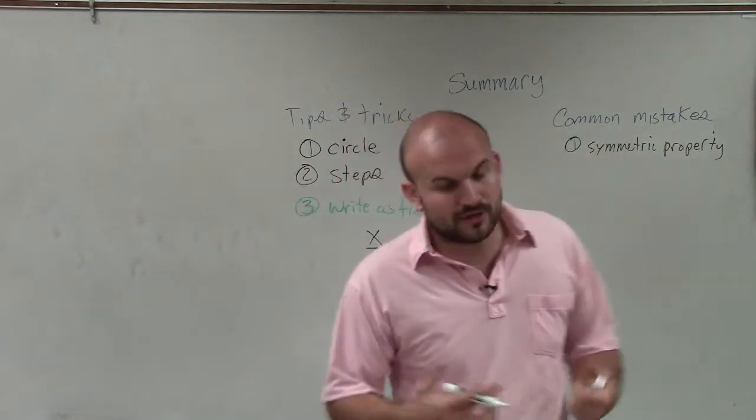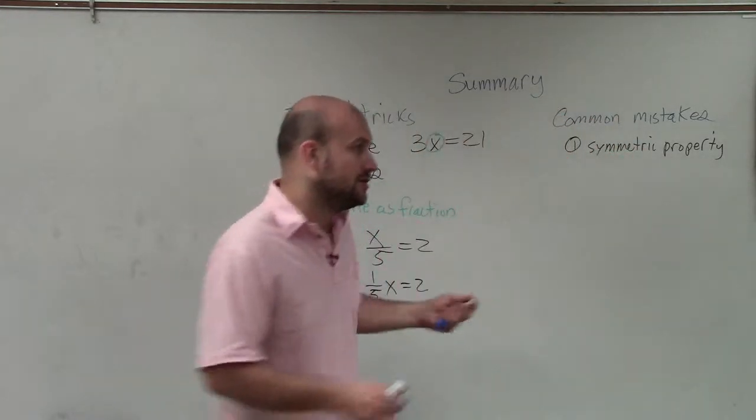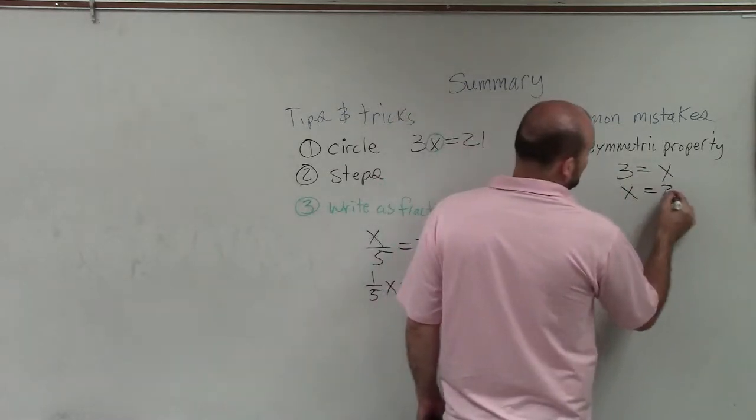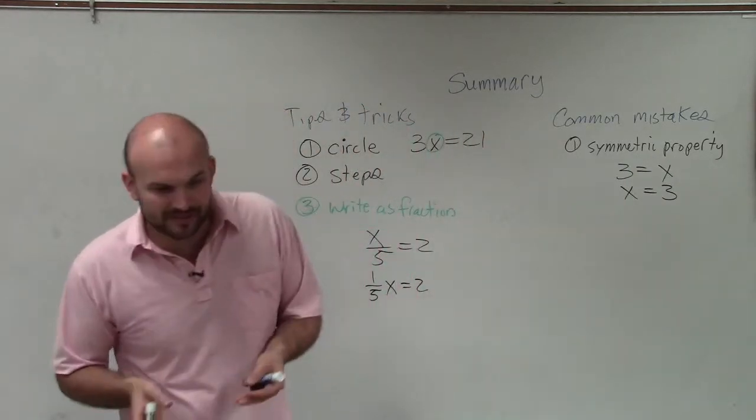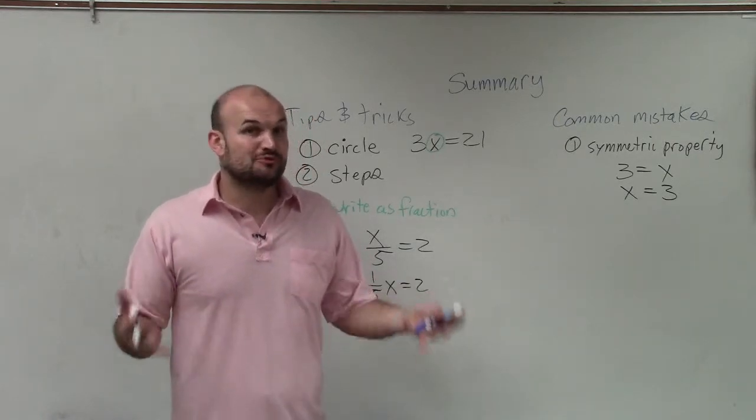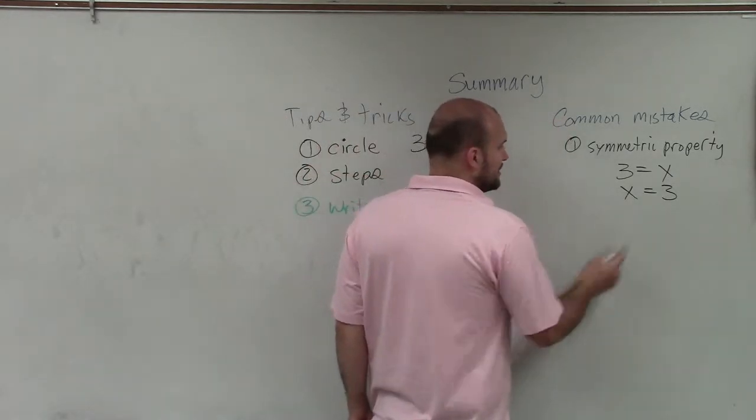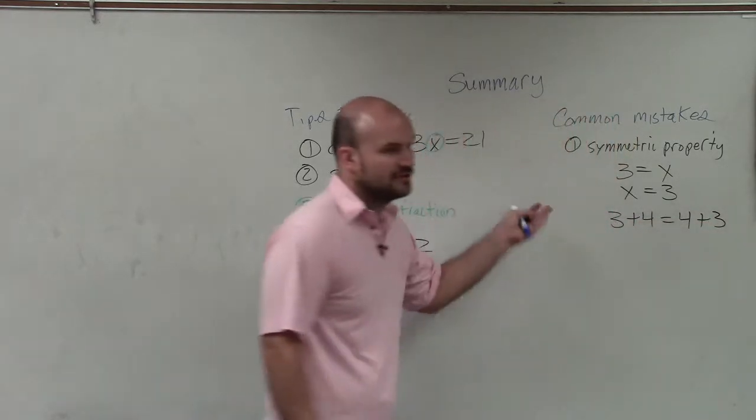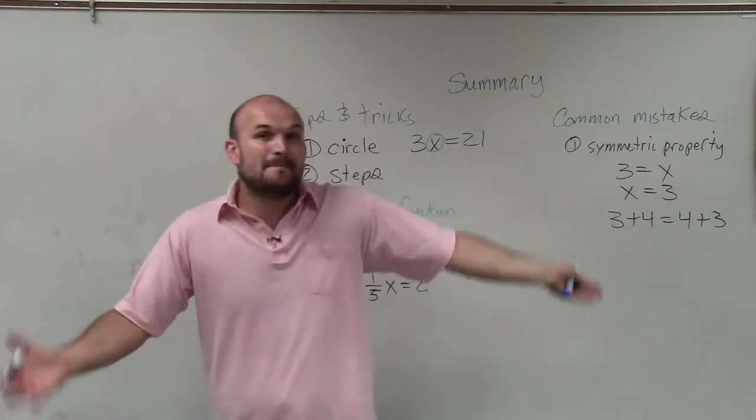The next thing is the symmetric property. We're going to be solving one-step equations with variables on both sides of the equation. So it's very important if you solve an equation and you have 3 equals x, for you to understand that is the same thing as x equals 3. But the thing that gets me with the symmetric property is students have a tough time with subtraction, and this is where it gets a lot of students. We know that 3 plus 4 is equal to 4 plus 3, but the order that we are adding them in does not matter.